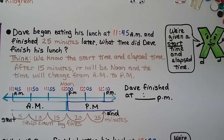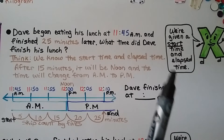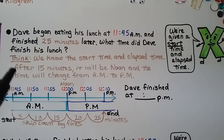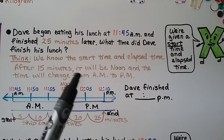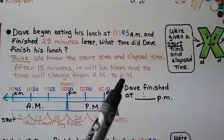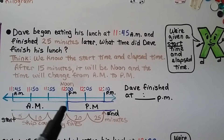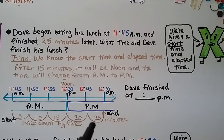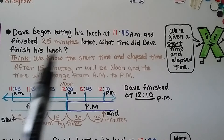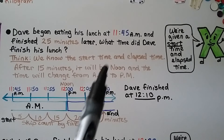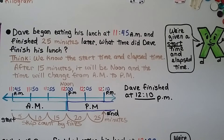Dave began eating his lunch at 11:45 a.m. and finished 25 minutes later. What time did Dave finish his lunch? We know the start time and elapsed time. After 15 minutes, 11:45 a.m. will be noon — the time changes from a.m. to p.m. We skip count by fives: 11:50, 11:55, then 12 noon — that's 15 minutes. He ate for 25 minutes total, so 5 more minutes is 20 and another 5 is 25 minutes, bringing us to 12:10 p.m. The minute hand went past the 12 on an analog clock, and our end time is 12:10 p.m.